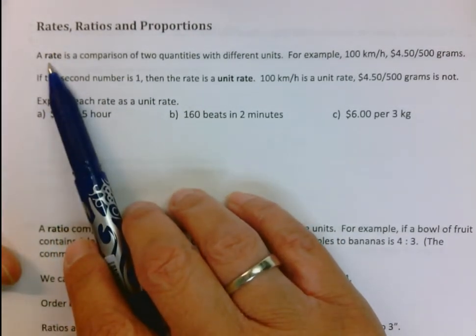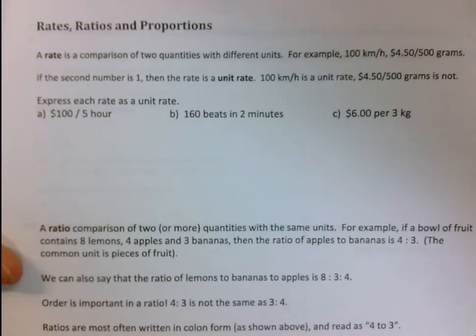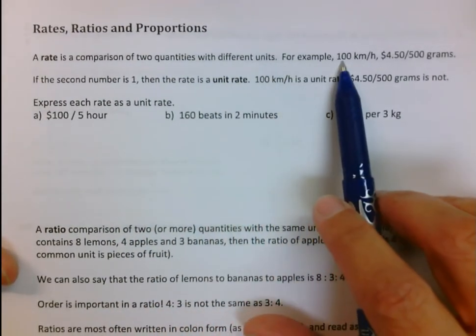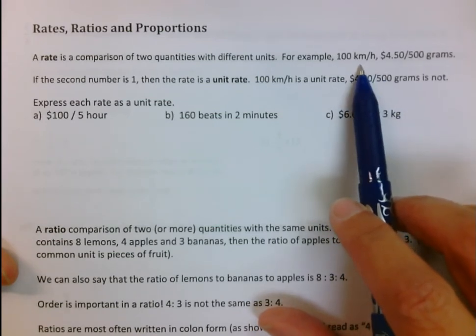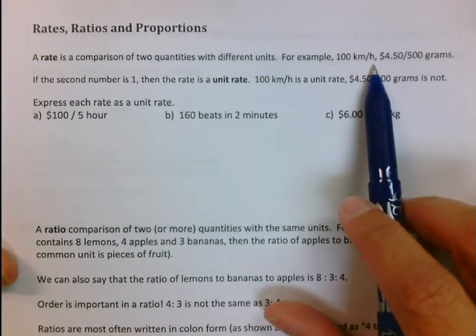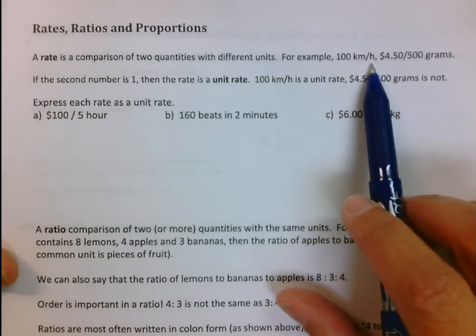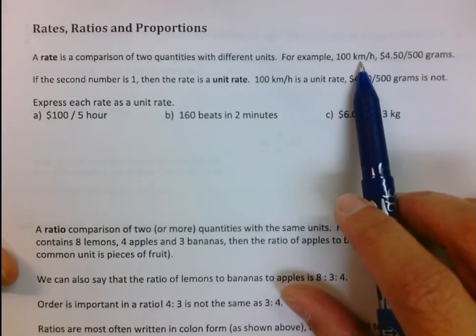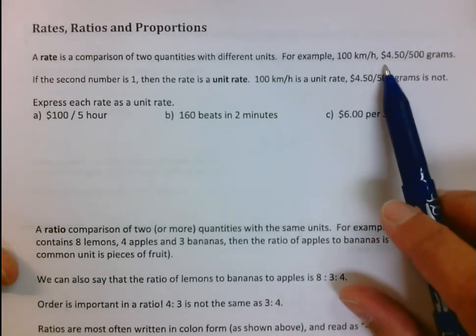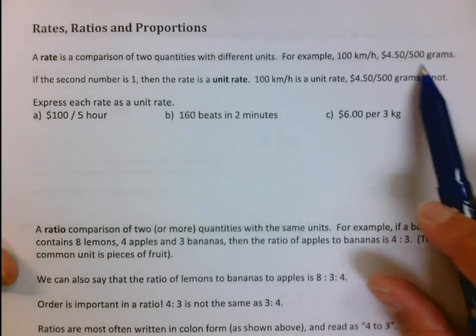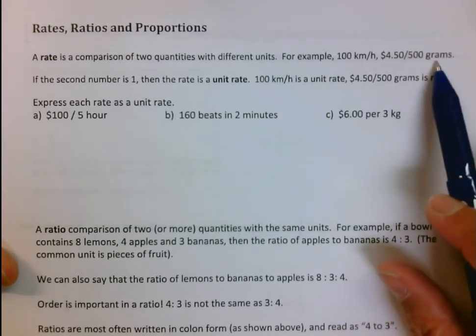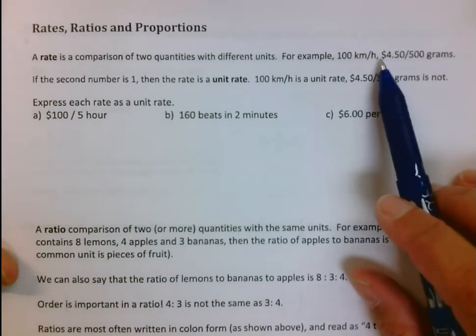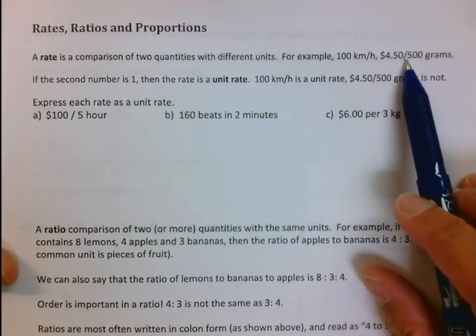The first term we have is rate. A rate is a comparison of two quantities with different units. For example, 100 kilometers per hour. That's a comparison of kilometers to hours. Another rate: $4.50 per 500 grams. That is saying for every 500 grams, the cost is $4.50.